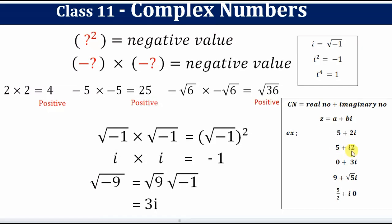A few examples: 5 + 2i is the same as 5 + i·2, where 5 is the real part and 2i is the imaginary part. 3i can be written in standard form with real part 0. 9 + 5i equals 9 + i√5. A purely real number like 5/2 can be written in standard form as 5/2 + i·0.